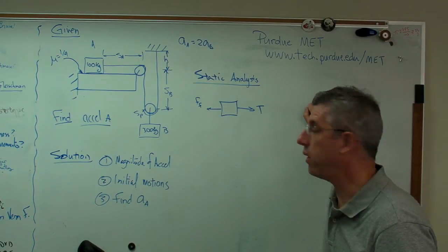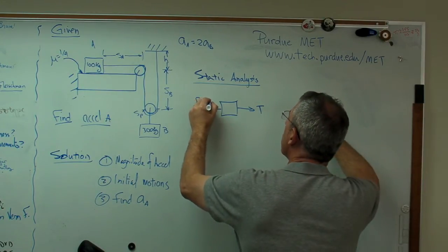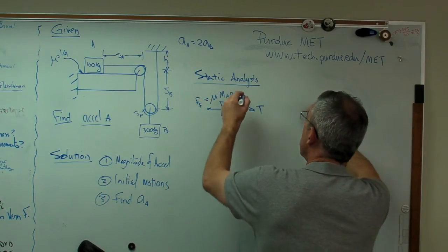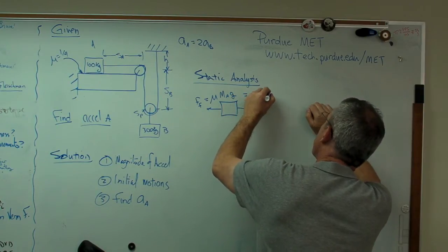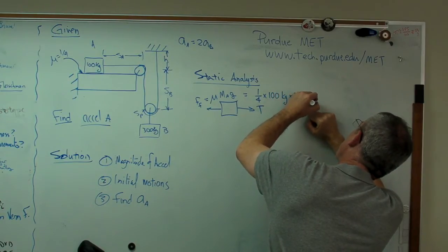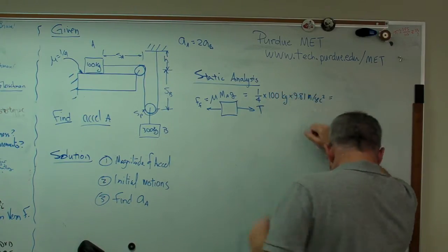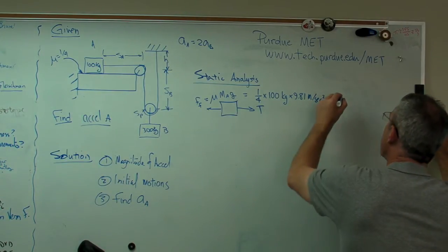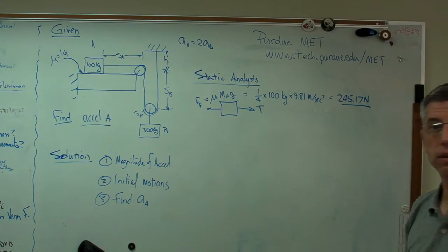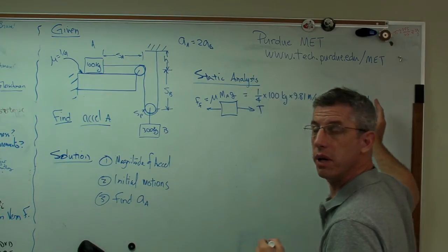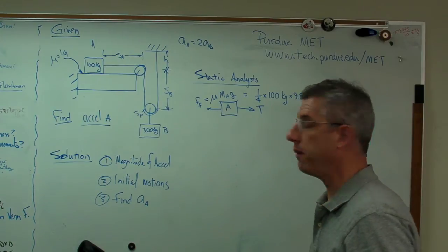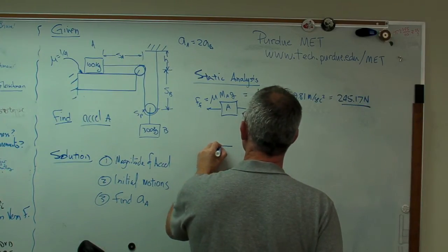It will in a minute. That's mu MA times G. That's one fourth times 100 kilograms times 9.81 meters per second squared. And that comes out to be 245.17 newtons. That's the force that is going to be required to get mass A moving.